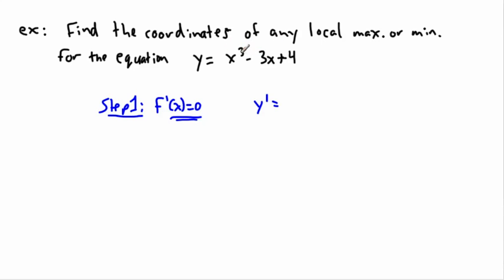So in this case, I have x cubed originally. My derivative then becomes: the three comes in front, so three times x, and the exponent becomes three minus one, which is just two. So three x squared. And again, we have a negative three — there was a one on top, so one times negative three just makes it negative three, and x to the power of one minus one gives me x to the zero, which means it disappears. And then the derivative of a constant just disappears. So y-prime equals three x squared minus three — this tells me what my derivative is at any x value.